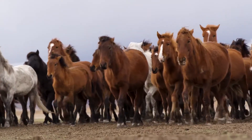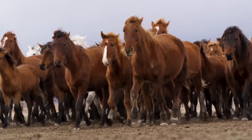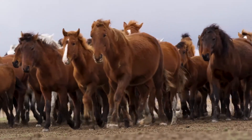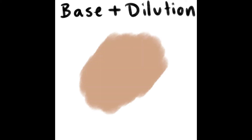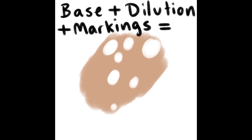An easy way to conceptualize horse coat colors is to think of them in three layers. On the very bottom we have the base coat color — black, red, and bay. On top of that we have dilutions, which modify the base coat color if they're present. On top of that we have white spotting and patterns. Today we'll be focusing on the first layer, which is base coat colors.